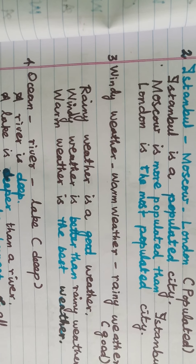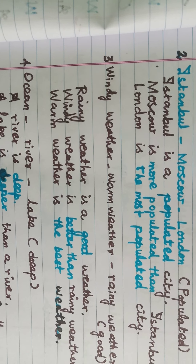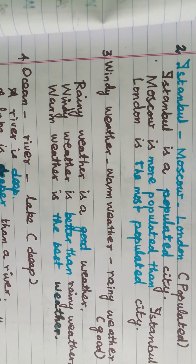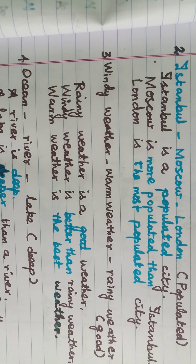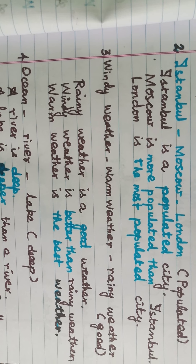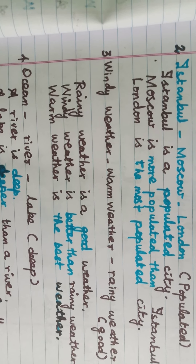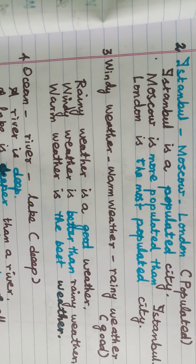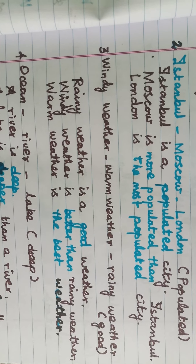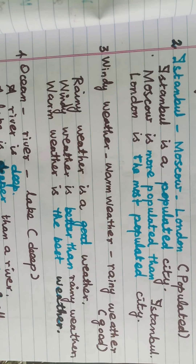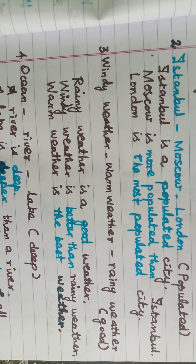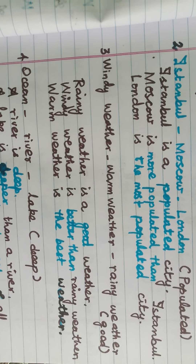Third example: windy weather, warm weather, rainy weather. The bracket word is 'good.' Rainy weather is good weather — positive degree. Windy weather is better than rainy weather — comparative degree. Warm weather is the best weather — superlative degree.